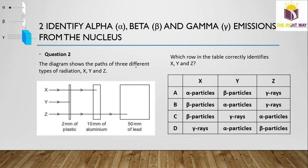Question 2: The diagram shows the path of three radiations X, Y, and Z. X can pass through plastic but not aluminum, so it is beta particles. Y is stopped by paper, so it is alpha particles. Z passes through several millimeters of lead, so it is gamma radiation. Therefore, X is beta, Y is alpha, Z is gamma — option B is correct.